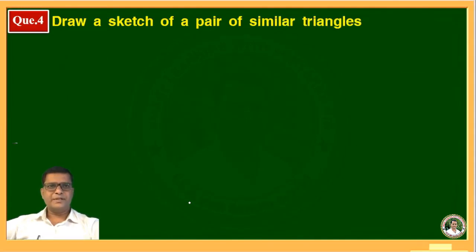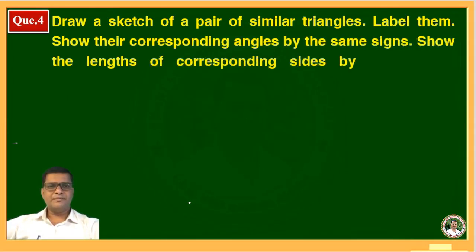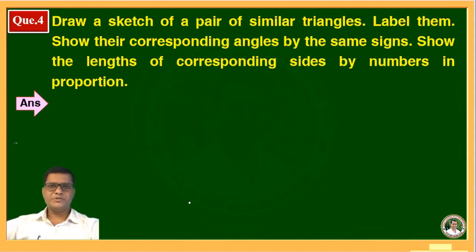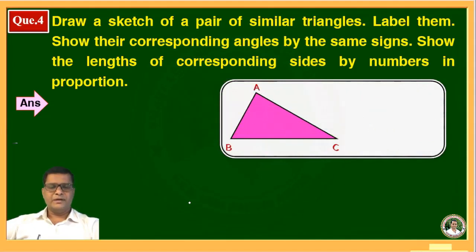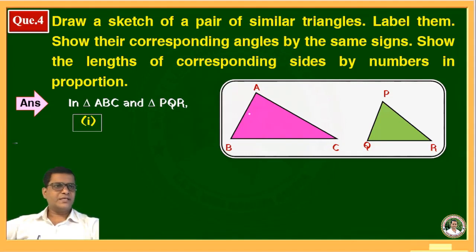The fourth question: draw a sketch of a pair of similar triangles, label them, show their corresponding angles by the same size, and show the lengths of the corresponding sides by numbers in proportion. Draw two triangles — triangle ABC similar to triangle PQR. Angle A is congruent to angle P, which is shown in the figure. The second pair is angle B congruent to angle Q, shown in yellow. The third pair is angle C congruent to angle R.